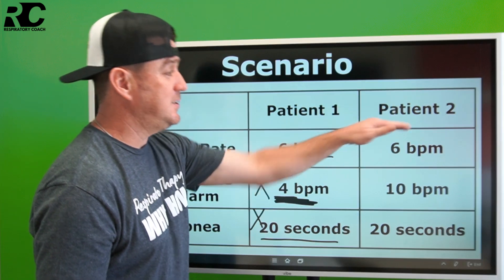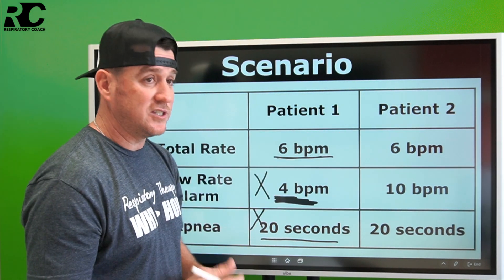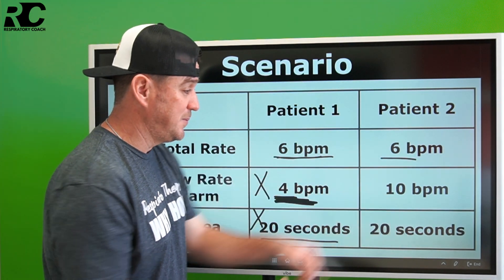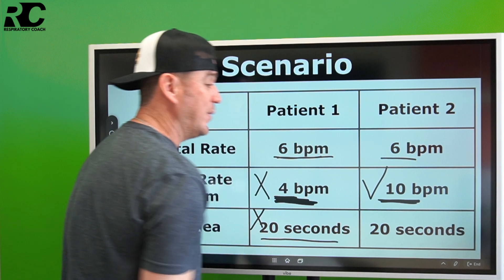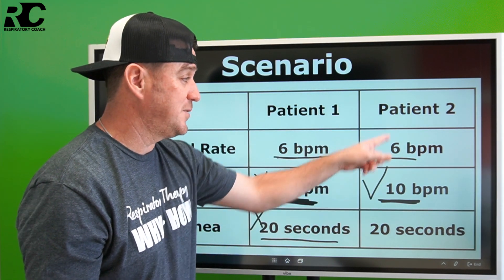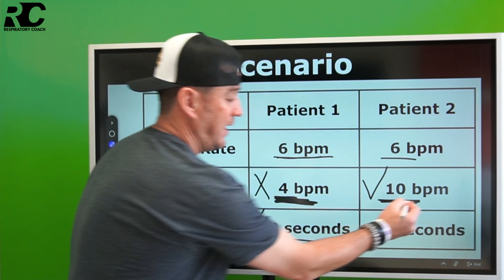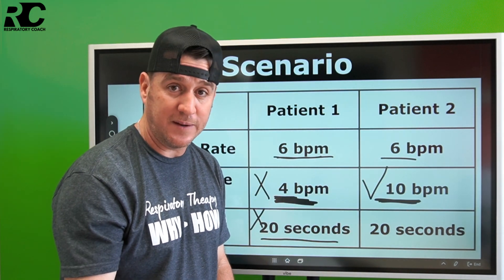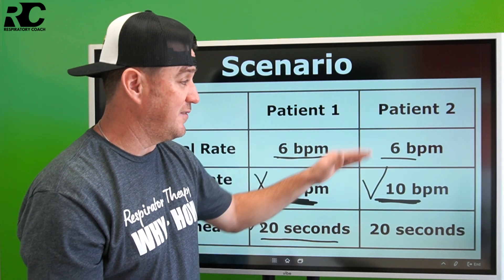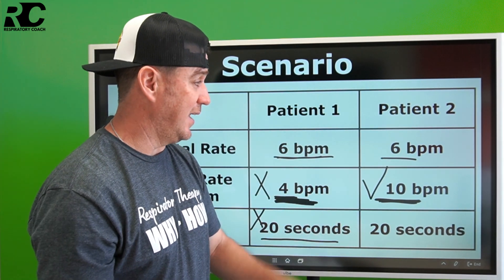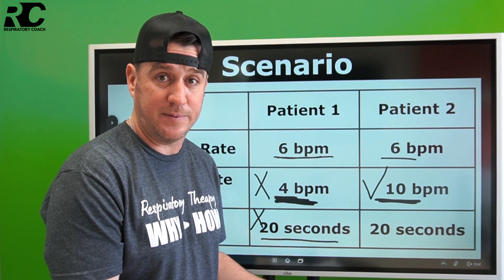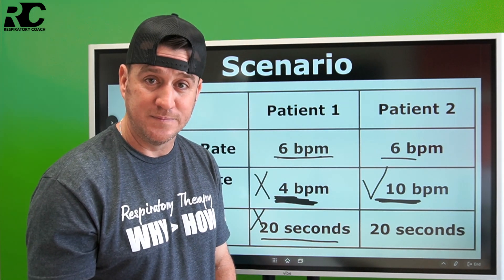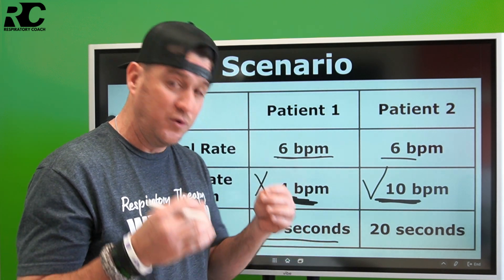Now look at patient two. We put this patient in CPAP, they receive some narcotics or sedatives, and their respiratory rate drops to six breaths per minute. But here, the low respiratory rate alarm is set at 10 breaths per minute. This is going to alarm — it will notify you that this patient's respiratory rate has fallen below the safe range you set on the ventilator. You go in, find them breathing five or six breaths per minute, and can investigate. Maybe they're not ready for CPAP. This is exactly about preventing harm, which goes right back to what Egan's says.